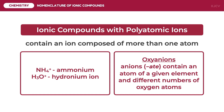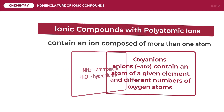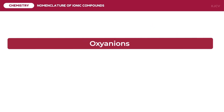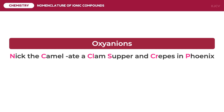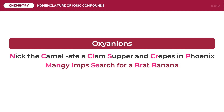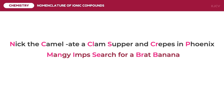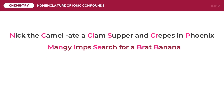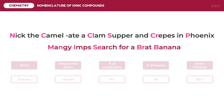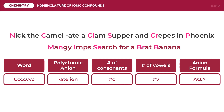However, there is a mnemonic device to easily remember the common oxyanions. These are: "Nick the Camel, AT Clam Supper" and "Krebs on Phoenix." And "Mangy Imps, Search for a Brat Banana." To use the mnemonic device, we identify the important word from the sentence, get the polyatomic anion from it, count the number of consonants and vowels, and then write the anion formula.